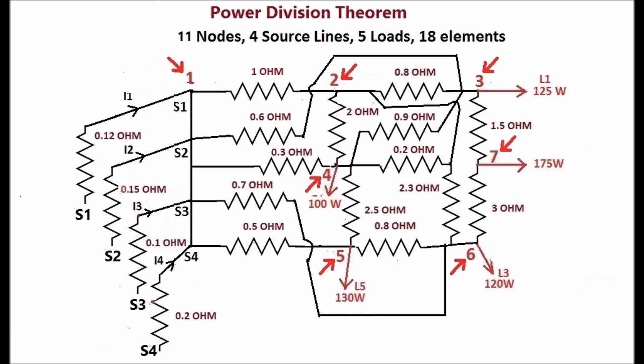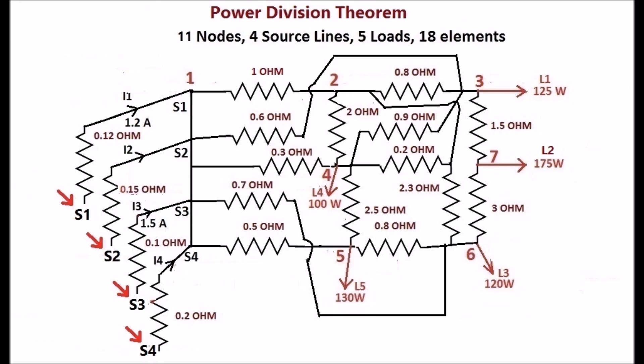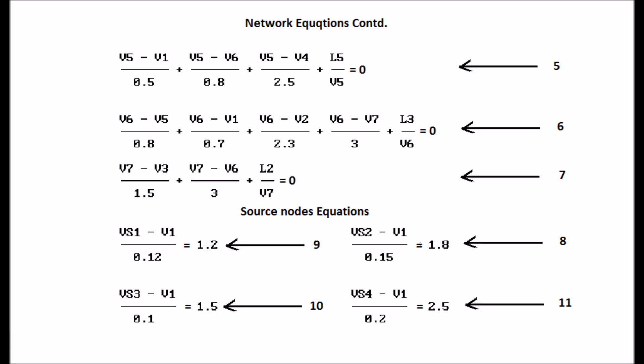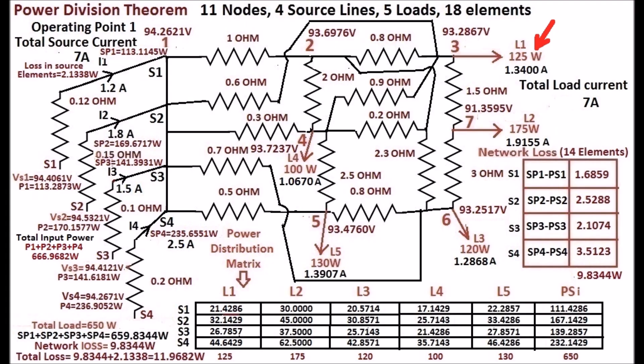Respective node voltage is taken as reference for writing nodal equations, as shown in the display. The 5 nodes are 125 watts, 120 watts, 175 watts, 100 watts, and 130 watts.